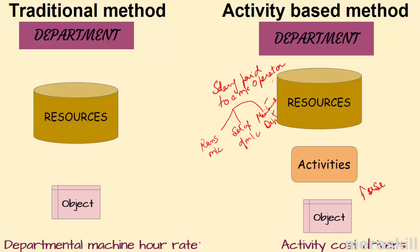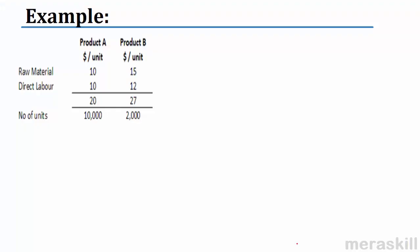These are called activity cost drivers — the activities which cause and drive the cost. In the traditional method there is a machine hour rate or a labor hour rate. Here there are activity cost drivers. Now, for a simple example, suppose I have product A and product B. Raw material and direct labor are given as $20 and $27 respectively. Number of units: 10,000 and 2,000. Product A is high volume; product B is low volume.